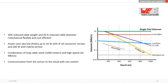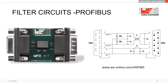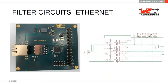Every bus system needs filtering between the connector and the PHY chip, which converts voltage and current signals into data. For PROFIBUS this includes a common mode choke for filtering common mode signals, TVS diodes, various capacitors, and a pi-filter on the power lanes.